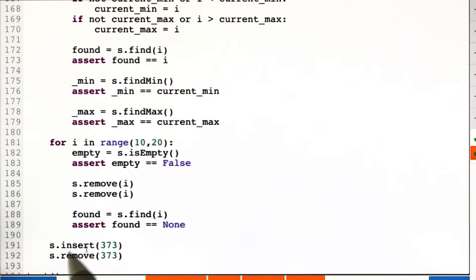And then just as a little aside here, we try to insert 373 and remove it to see what happens. This is really not too involved. You could have gotten quite a bit more advanced with this. This should do everything you need to do.